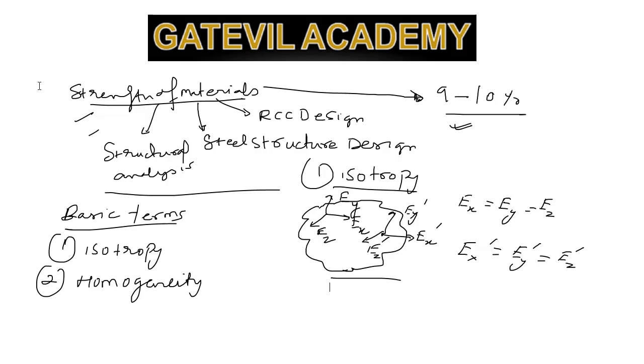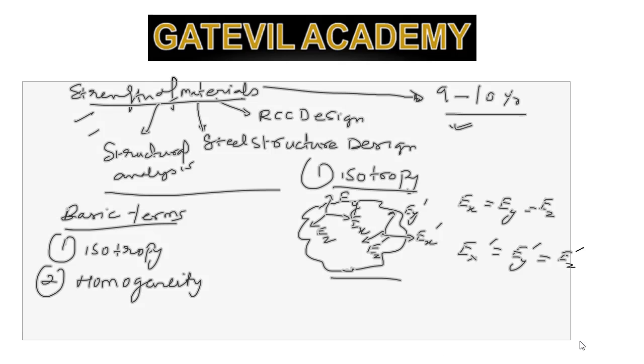Now let's move on to homogeneity. If a material is said to be homogeneous, then the material property throughout its volume should be the same. But at a point, in every direction it can be different.